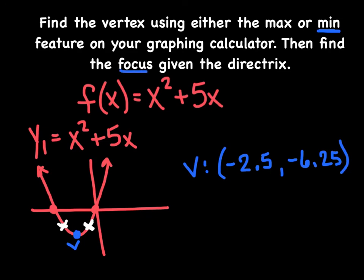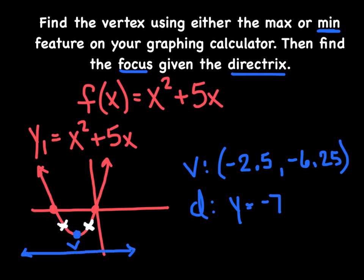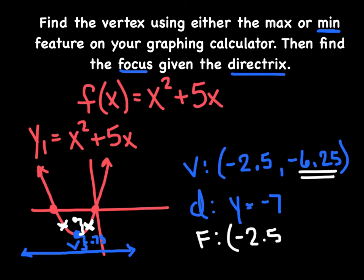The directrix is at y = −7, which is just below the vertex. The distance between the vertex (y = −6.25) and the directrix (y = −7) is 0.75 units. Moving 0.75 units above the vertex, the x-coordinate stays at −2.5, and adding 0.75 to −6.25 gives −5.5. So the focus is at (−2.5, −5.5).